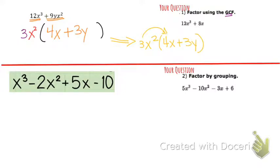So if we multiply, 3 times 4 is 12, x squared times x is x to the third, and then if you multiply this, 3 times 3 is 9, I have a y, and I have an x squared. So that checks out. So there you go. That's factoring out the greatest common factor.